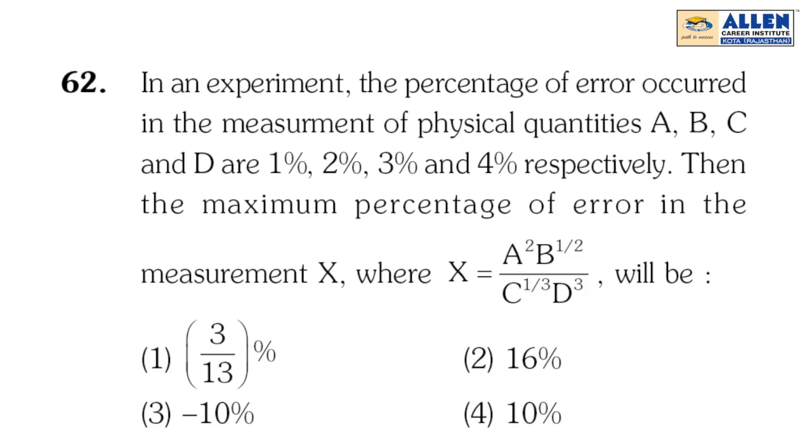Hello students, now we are going to discuss question number 62 of paper code P2. In an experiment, the percentage of error occurring in the measurement of physical quantities A, B, C, and D are 1%, 2%, 3%, and 4% respectively. Then the maximum percentage of error in the measurement of X, where X = A²B^(1/2) / (C^(1/3)D³), will be: